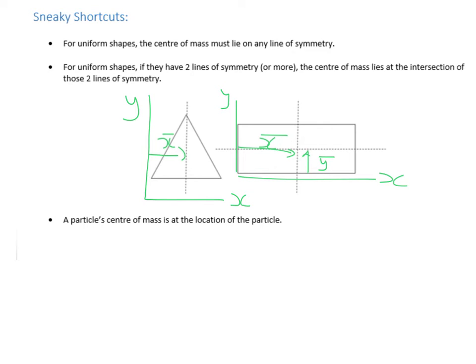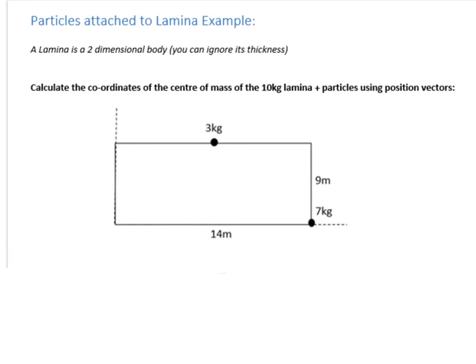The other thing you might see is a lamina like this with a particle added onto it, so it would just be like you've got a 3 kilogram particle attached to it here. And the center of mass of that particle is at the particle's location, so effectively what you've got is 2 objects here, but all of the mass of this is concentrated to a point. So let's have a look at an example with that.